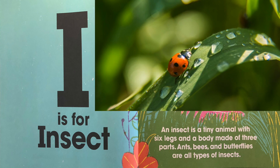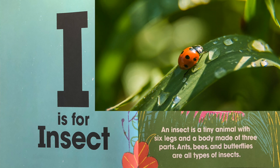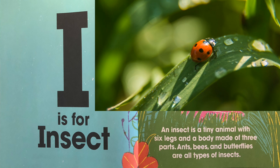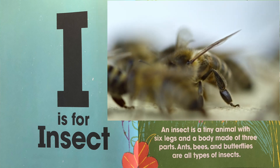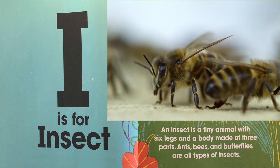I is for insects. An insect is a tiny animal with six legs and a body made of three parts. Ants, bees and butterflies are all types of insects.